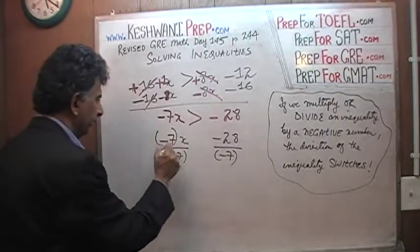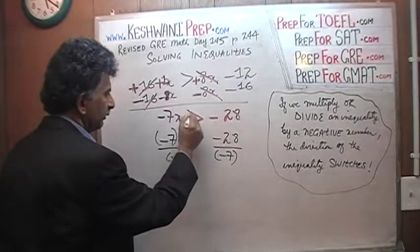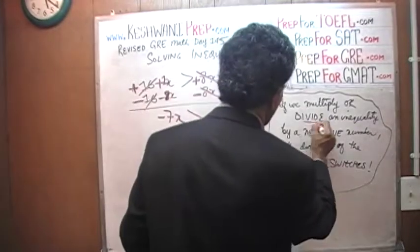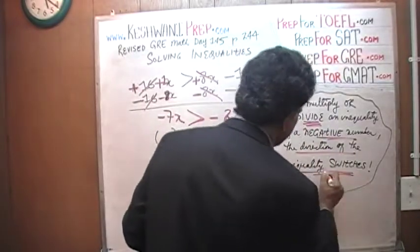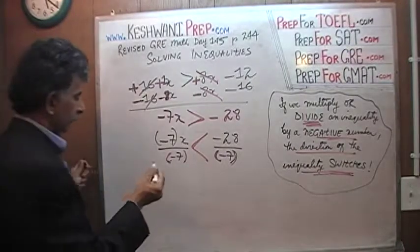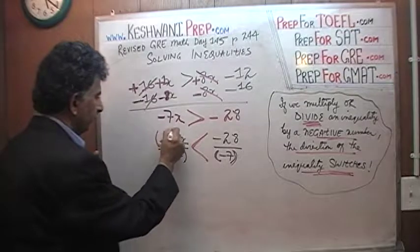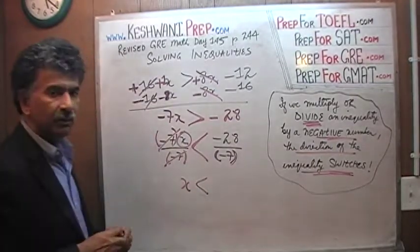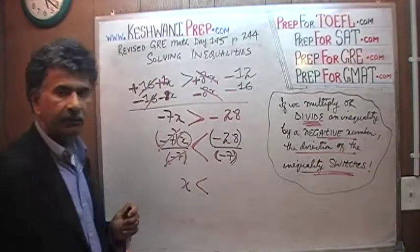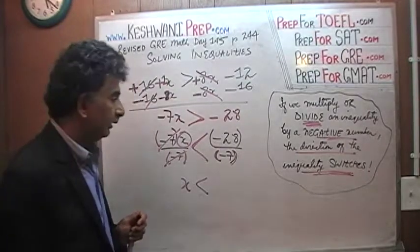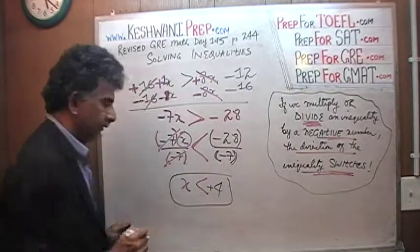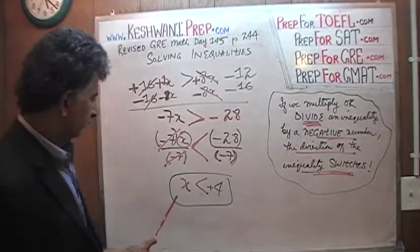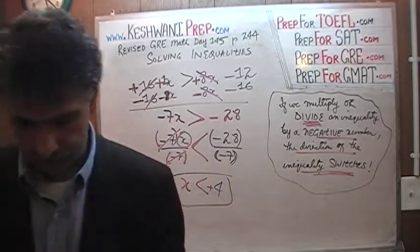As a result of dividing by a negative number, this inequality sign — which was facing this way — now has to face that way, because we divided by a negative number, which switches the direction of the inequality. The negative 7 on top and the negative 7 on the bottom cancel out, leaving just x. Negative 28 divided by negative 7: the two negatives cancel, giving positive 4. So x is less than 4. That's our solution — we're done with problem number 8.